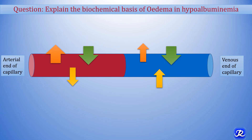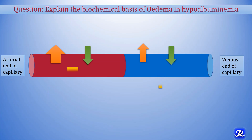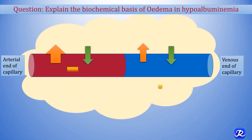If protein concentration in serum is reduced — hypoalbuminemia — the effective osmotic pressure is correspondingly decreased and return of water into blood vessels is diminished. More water is expelled from the arterial end and less water is imbibed from the venous end of capillaries. This accumulation of fluid in the tissues is called edema, which is seen when albumin level in blood is less than 2 grams per deciliter.